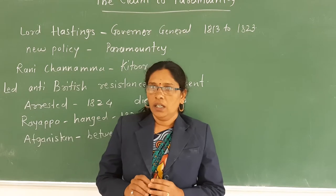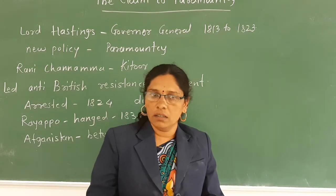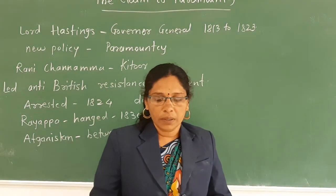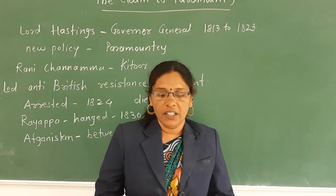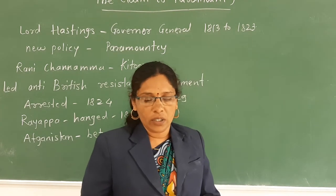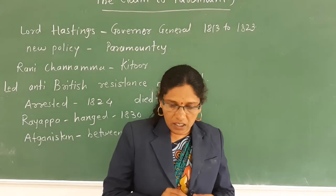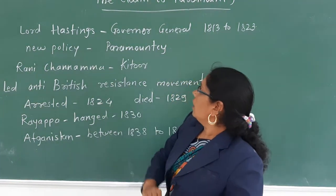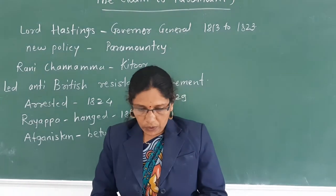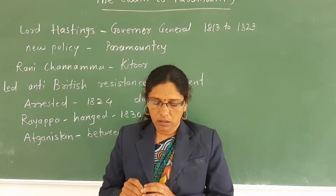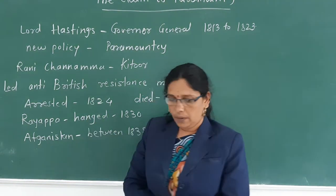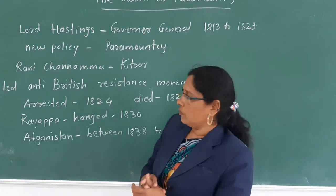The British East India Company established rule over India, but from the early 19th century the company pursued an aggressive policy of territorial expansion. Under Lord Hastings, who was the Governor General from 1813 to 1823, a new policy of Paramountcy was initiated.